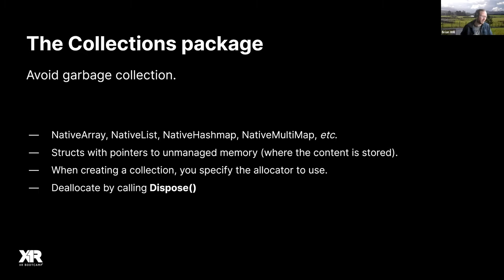When you run your code in the editor, safety checks are enabled by default. They monitor your allocated collections and look for ones you haven't disposed of in time. When you allocate a native list, you specify how long you want it to live, and if it lives too long you'll get an exception on the console. This tells you exactly when you have these problems so they don't hide in your code. By using unmanaged objects we avoid garbage collection, and critically, the Job System and Burst can only work with unmanaged objects.